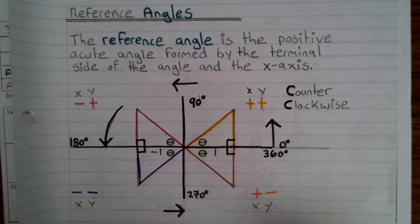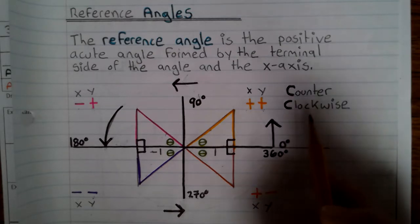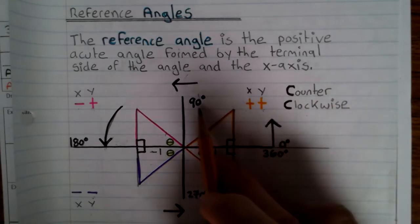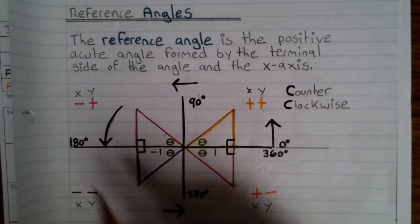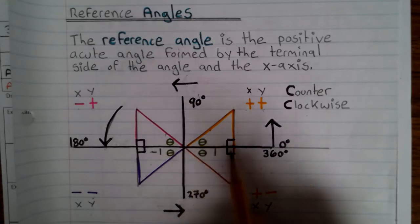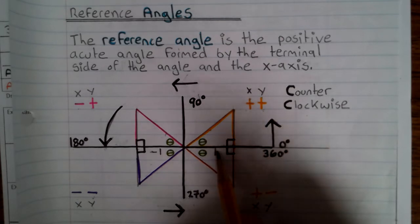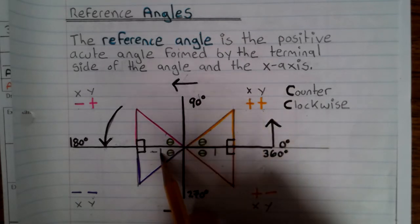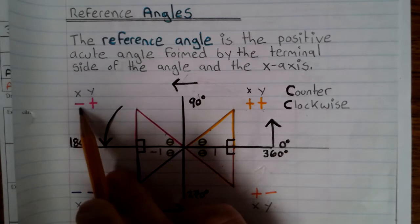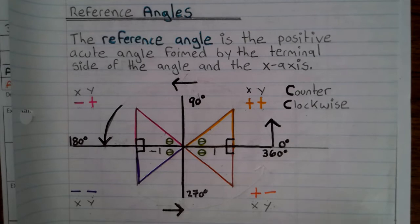Here we start at zero degrees, go counter-clockwise: 90, 180, 270. This section right here is 1, because the x value is 1 here on the x-axis. This is negative 1 because the x value is negative. Go ahead and complete your reference angle notes.